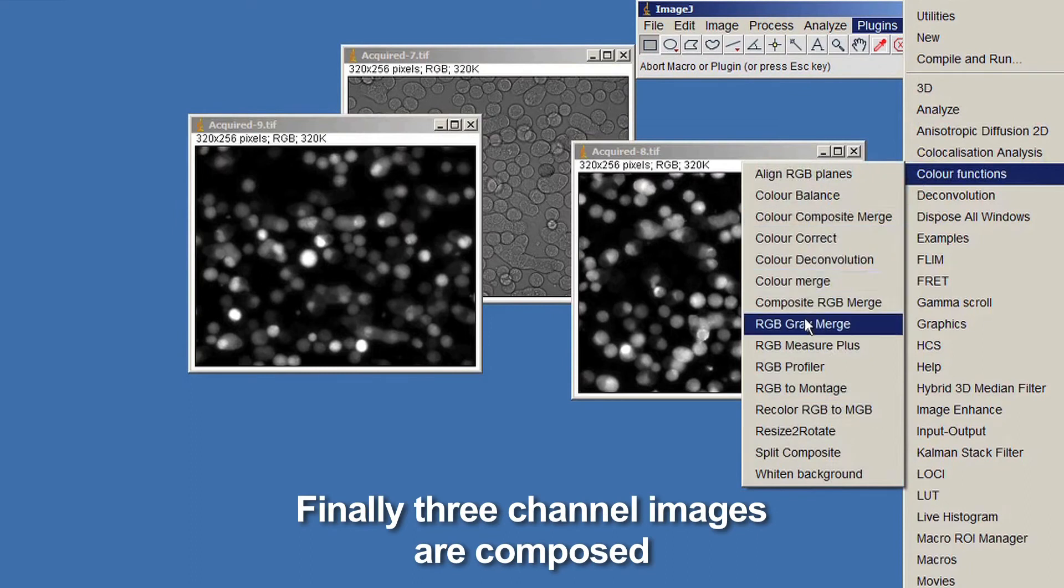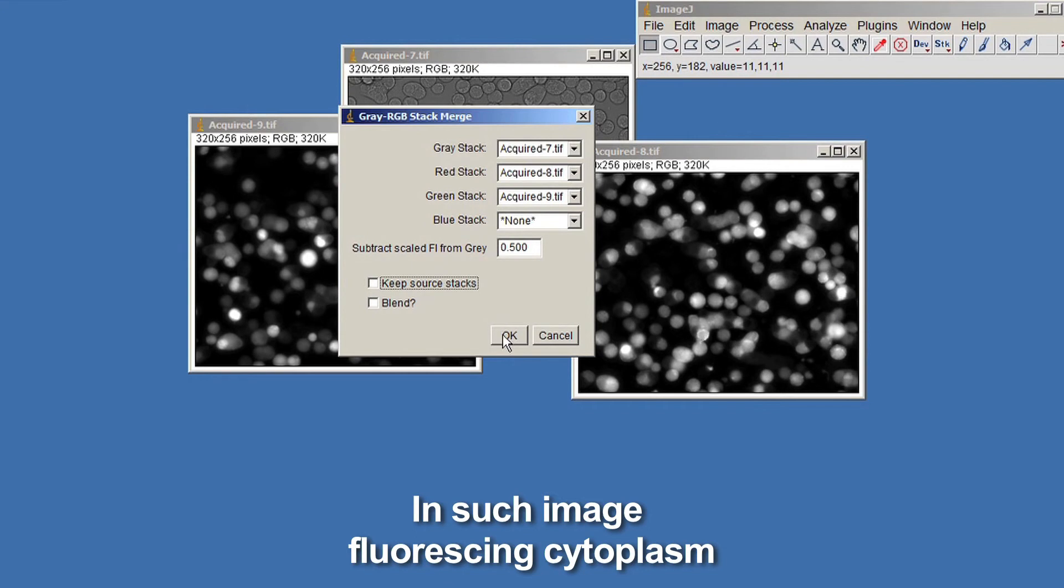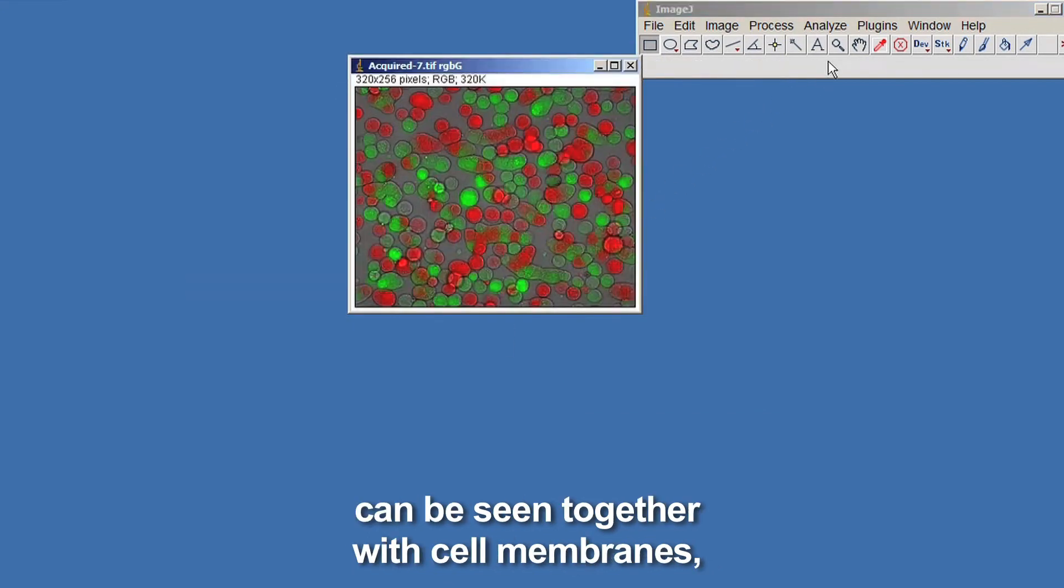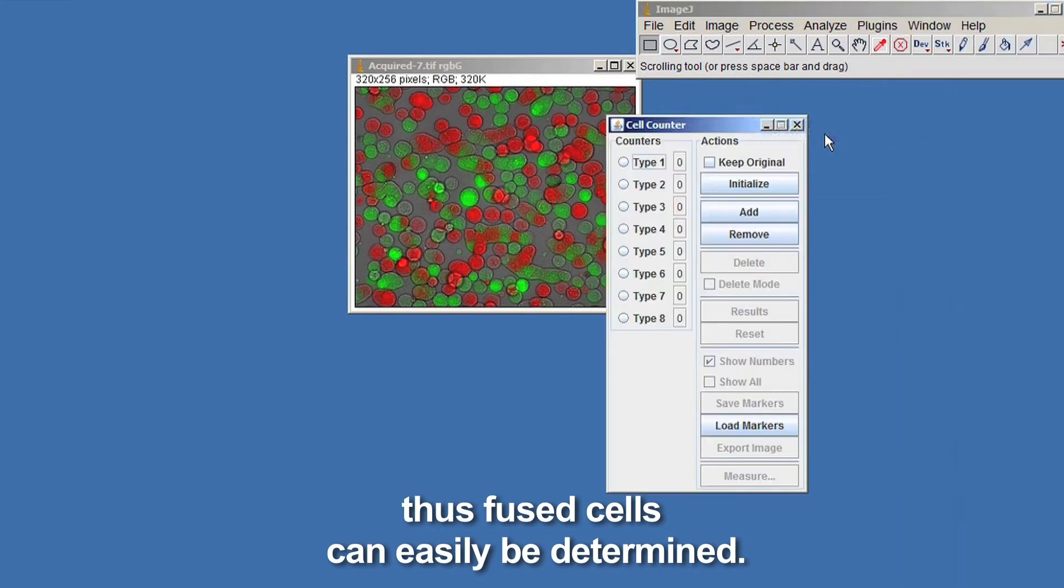Finally, three-channel images are composed using RGB to grey ImageJ plugin. In such image, fluorescing cytoplasm can be seen together with cell membranes, thus fused cells can easily be determined.